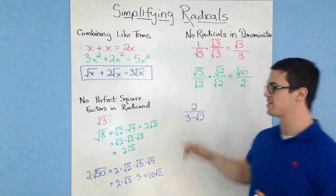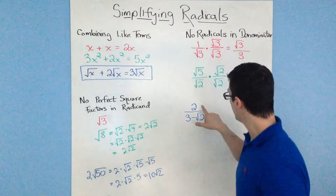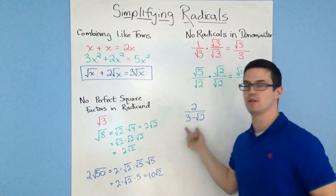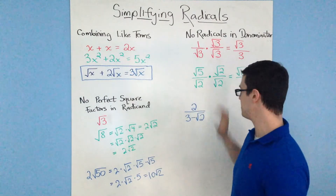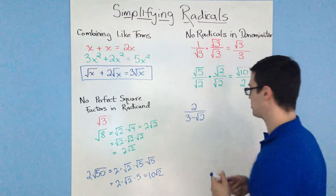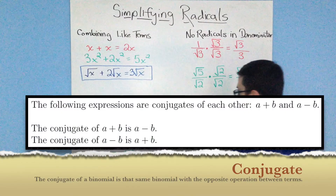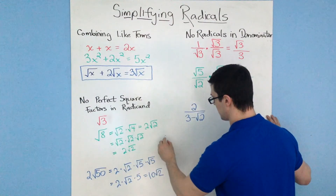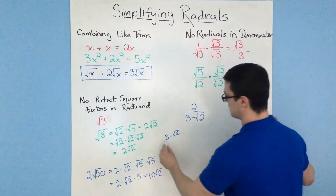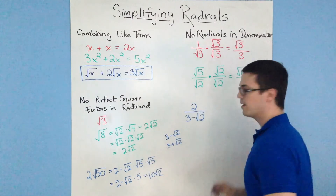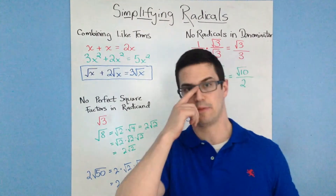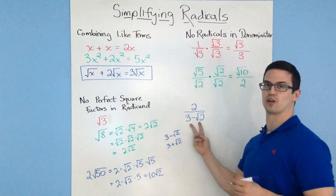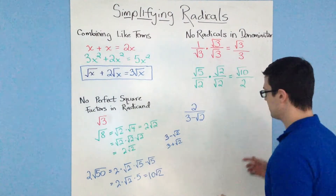For the third example, we have 2 divided by the quantity 3 minus the square root of 2. Whenever you have a radical in the denominator that's part of a binomial, you need to use what's called a conjugate. The conjugate of 3 minus the square root of 2 is 3 plus the square root of 2. We multiply both the numerator and denominator by this conjugate, because conjugates allow the bottom term to simplify so it will no longer have a radical.